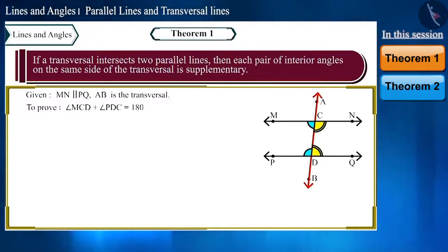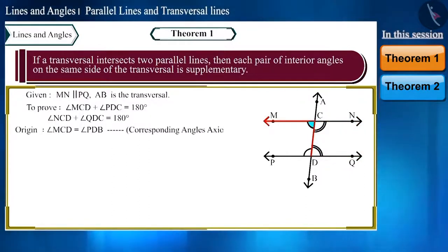That is, the sum of angles MCD and PDC will be 180 degrees, and the sum of angles NCD and QDC will also be 180 degrees. Here angle MCD and PDB are corresponding angles, so they will be equal.